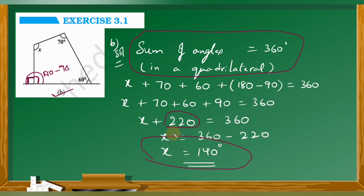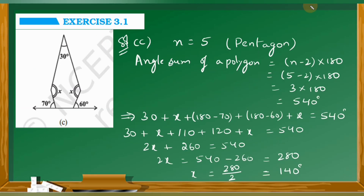So x is equal to 140 degrees. That is the x value — 140 degrees. Understood, children?